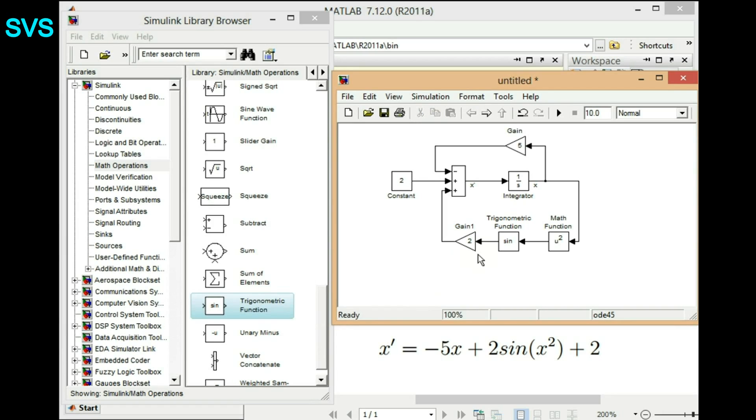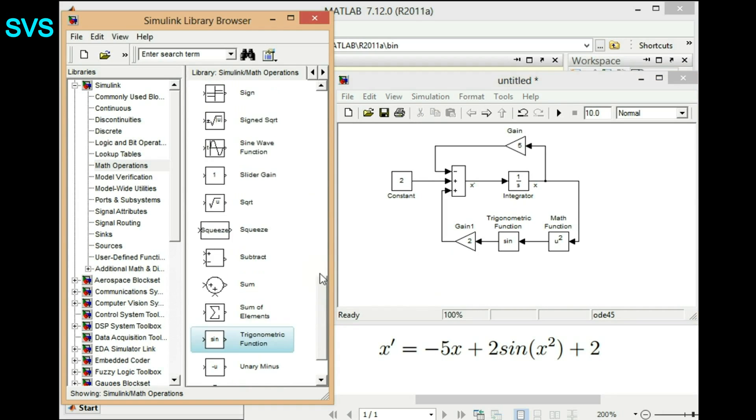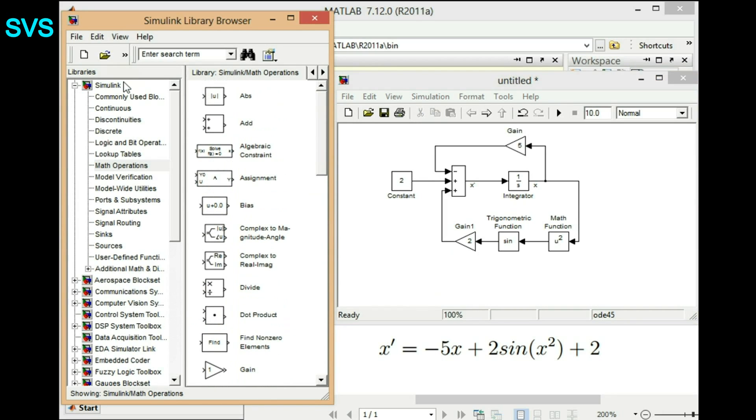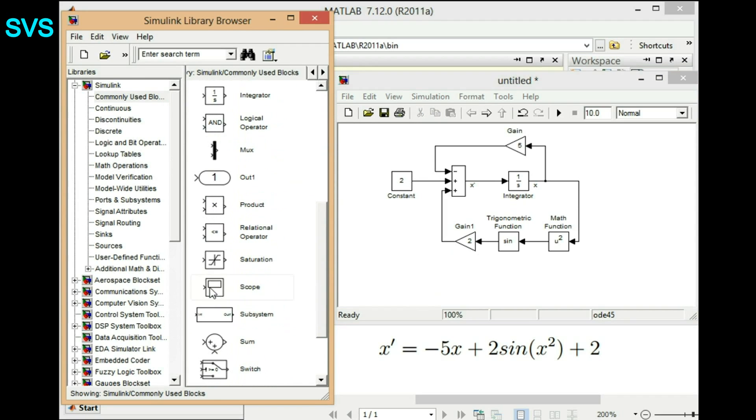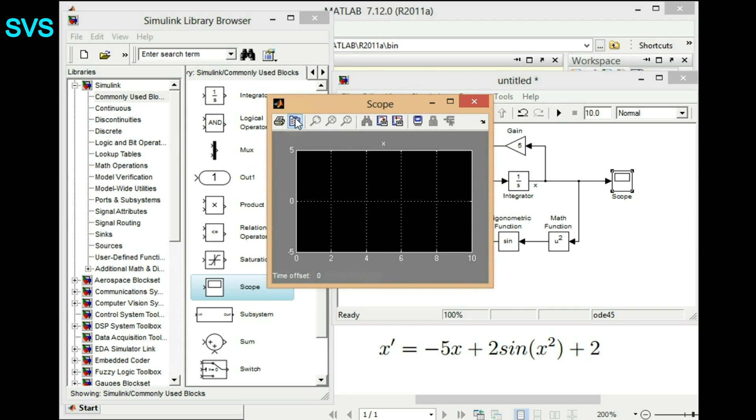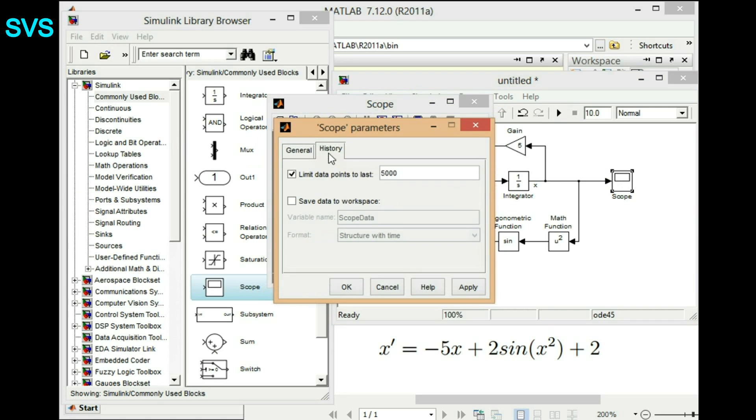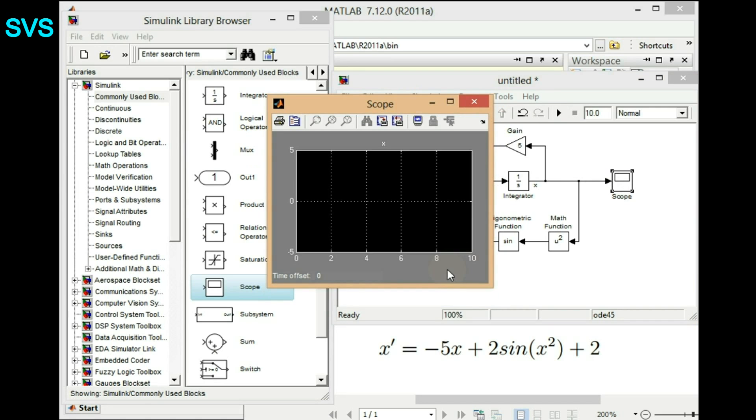So this is a simple differential equation solver block in Simulink. And for observing the output we'll have scope, we'll use a scope block. And we'll connect it to x which is our solution. So before simulating it we'll first set the scope, so we'll just remove that limit we have discussed, and then we'll configure the parameters.